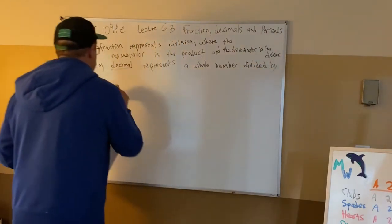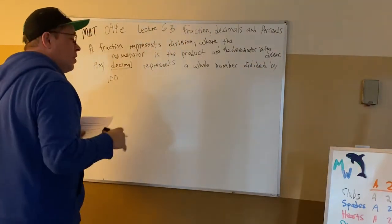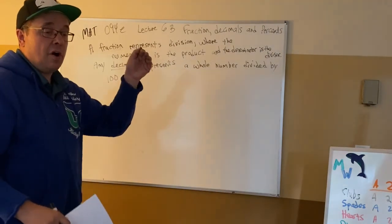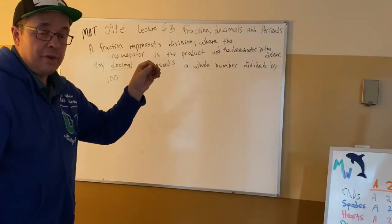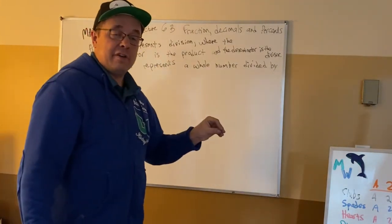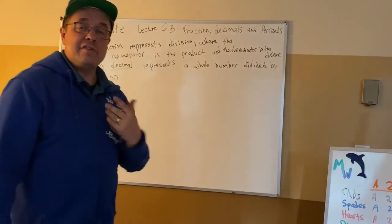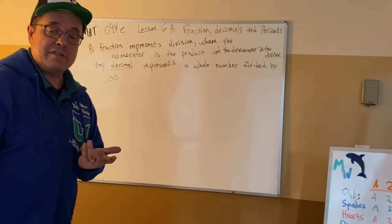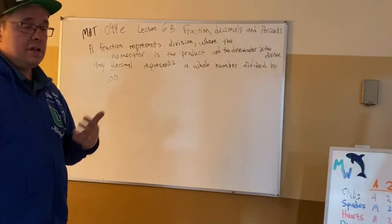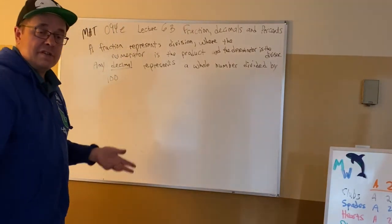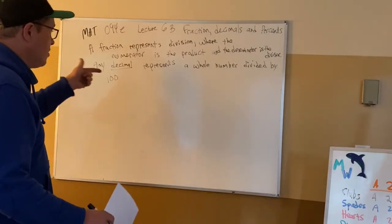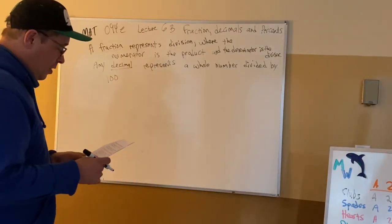Any decimal represents a whole number divided by 100. Per cent — per means over, and cent means 100. Dollars and cents: 100 cents in a dollar. Centuries: 100 years. Cent is over 100. So percent is a number that goes over 100.